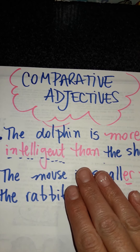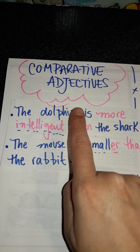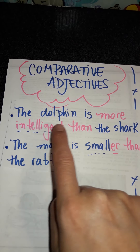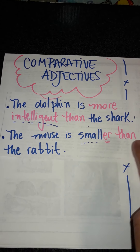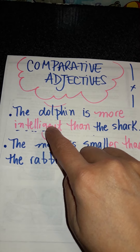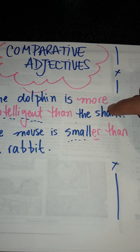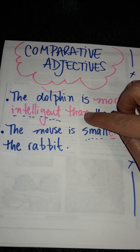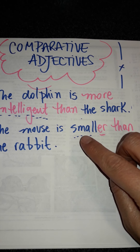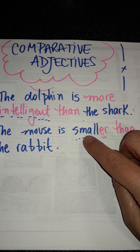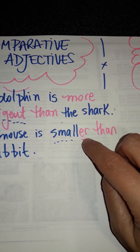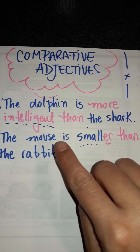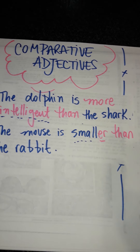So here I have the sentences: 'The dolphin is more intelligent than the shark.' 'The mouse is smaller than the rabbit.' 'Intelligent' is a long adjective, so we include the word 'more' and 'than' to compare. In the case of 'small', it is a short adjective, so we add one syllable more and say 'the mouse is smaller than the rabbit'.